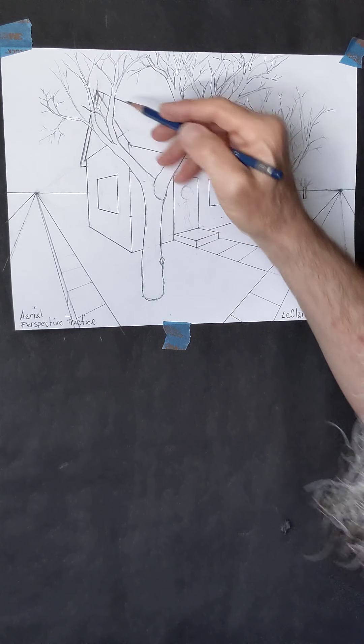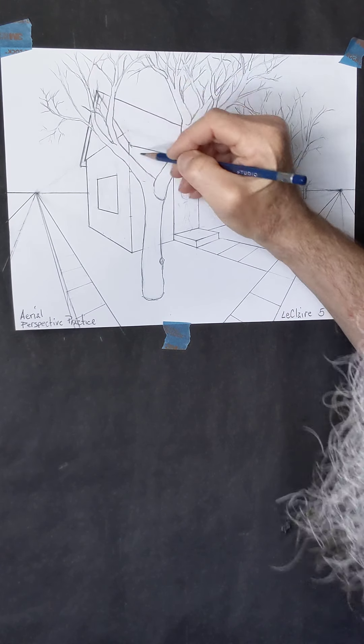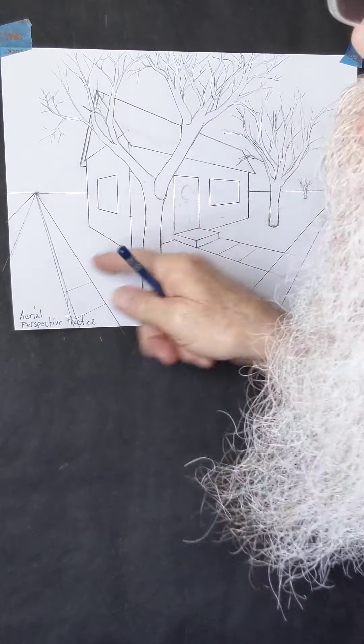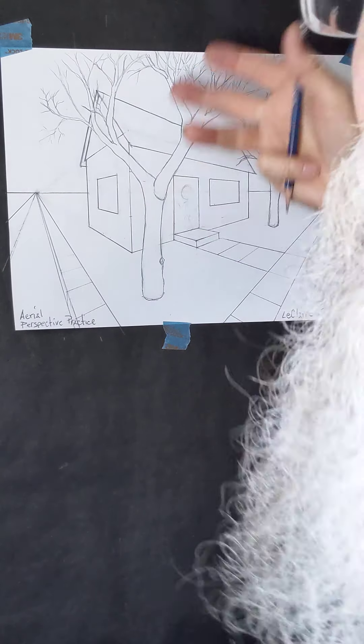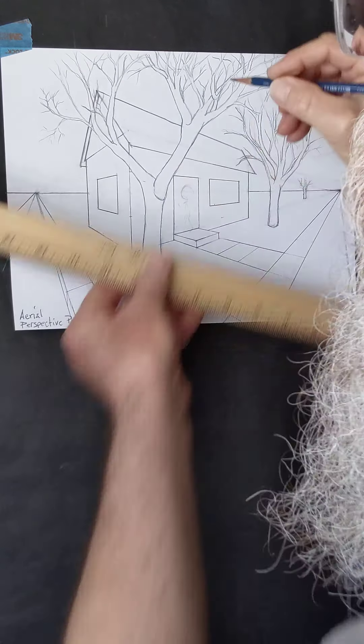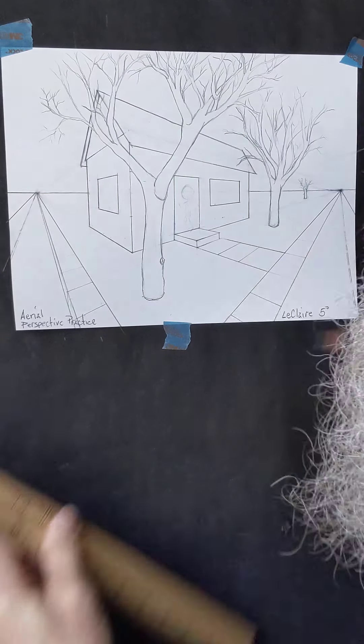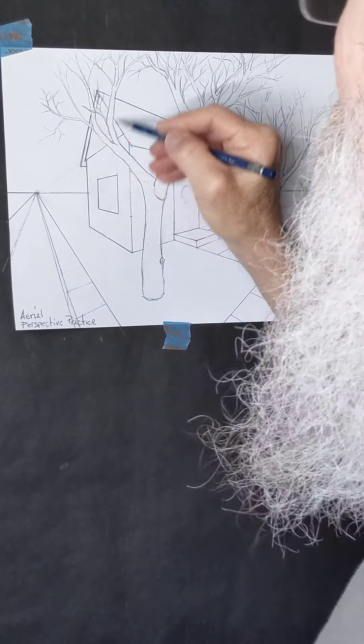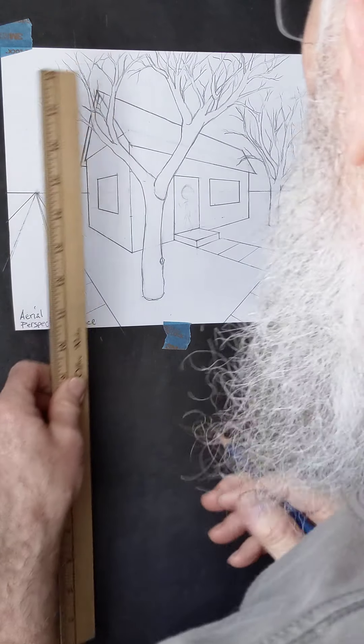I also went back in and I re-established the lines of the house, the building, where I accidentally erased to make the tree be in front of it. So I did some accidental erasing here, so I just put my ruler back up and I redrew the edge of the building up to the line of the tree. Once that was done, and I did it in this area too, didn't do it as well as I could have.